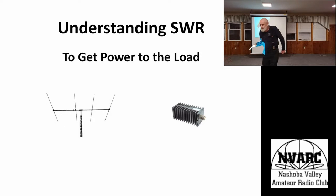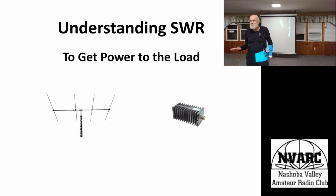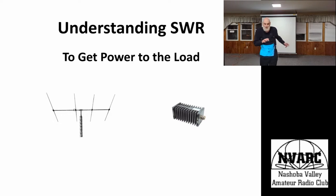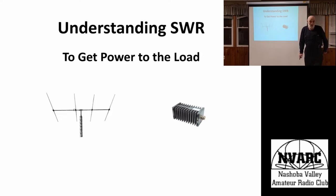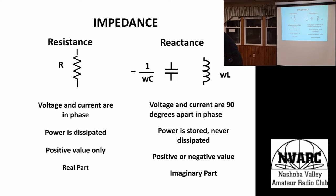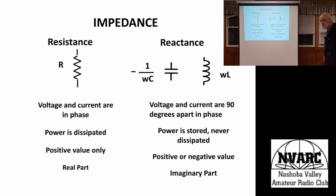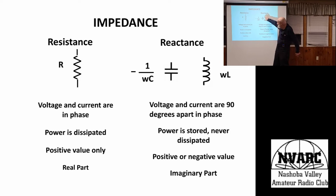The whole subject of antennas, efficiency, and losses is filled with jargon. Tonight we're going to start from the very bottom up. All we're going to try to do is get the power to the load — whether it's a great amount of aluminum you put up or just your dummy load, everything we talk about tonight will be the same for either one. We have to start by understanding impedance, which has two parts: resistance and reactance.